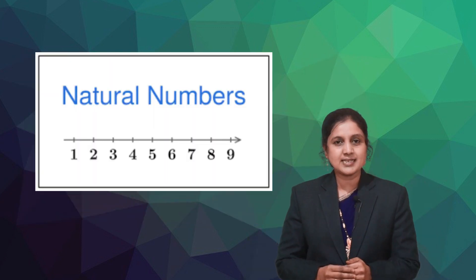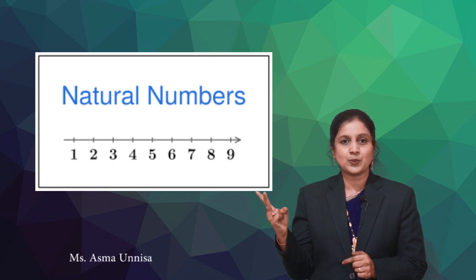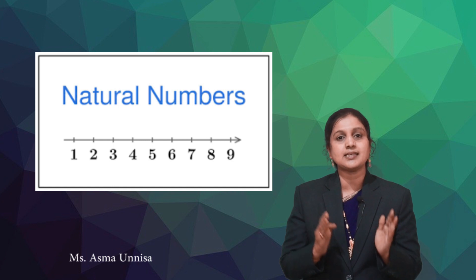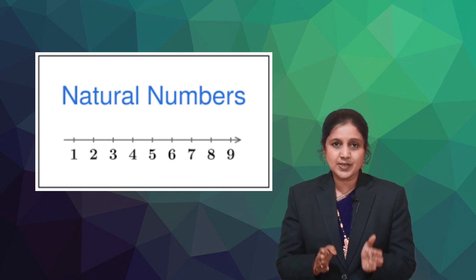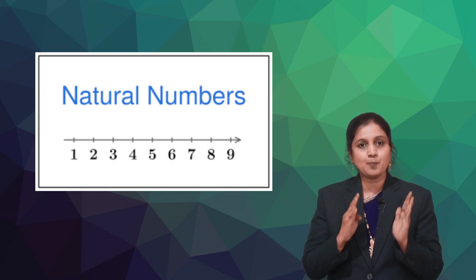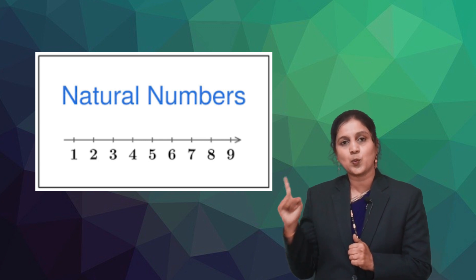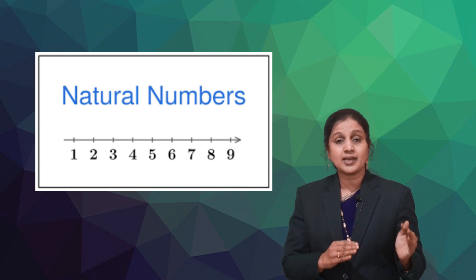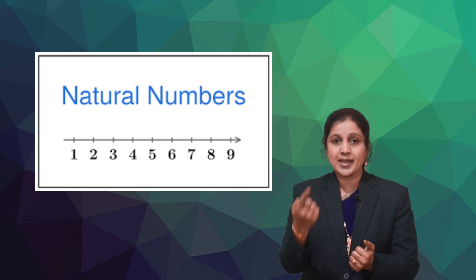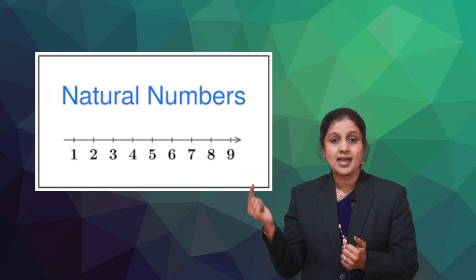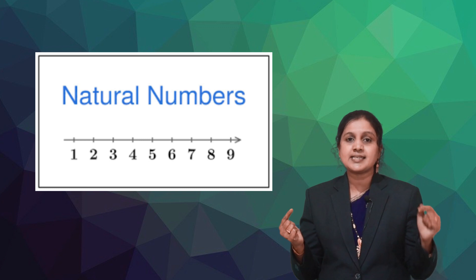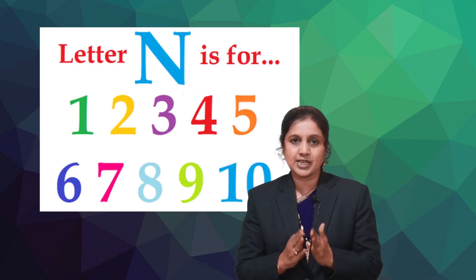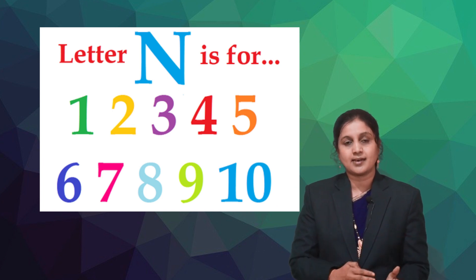The counting numbers one, two, three, four and so on are called as natural numbers. The natural numbers are all positive numbers like one, two, three, four, five and so on. They are the numbers which you usually count and they are continue till infinity. The set of natural numbers is denoted by capital letter N.